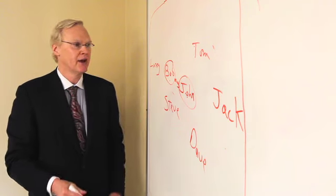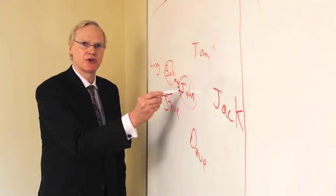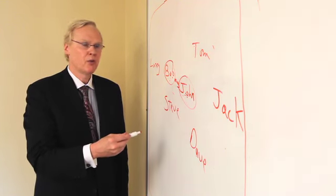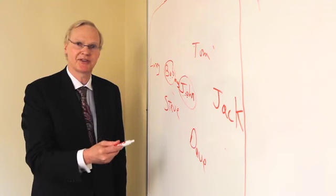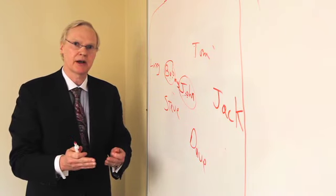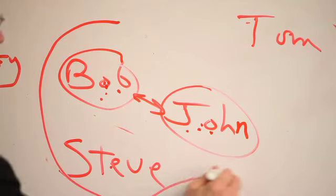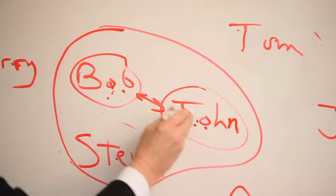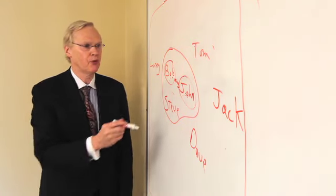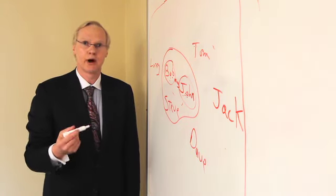Well, the hypothetical monopoly test says we start with the products that overlap between the merging firms. So, that's Bob and John's men's belts. And then, to figure out what the relevant market is, we start by including some close substitutes and ask the question whether a hypothetical monopolist over all of those products could raise price by 5% or more. So, in this particular case, we draw a market boundary around Bob's belts, John's belts, and a close substitute, Steve's belts. We ask the question, is it possible for the monopolist over all three kinds of belts to raise prices by 5% or more for a year or more?